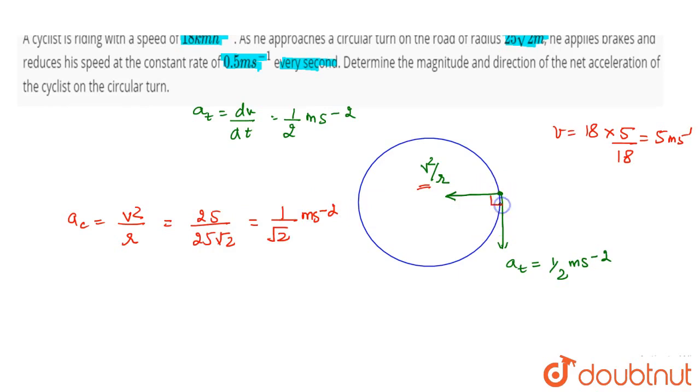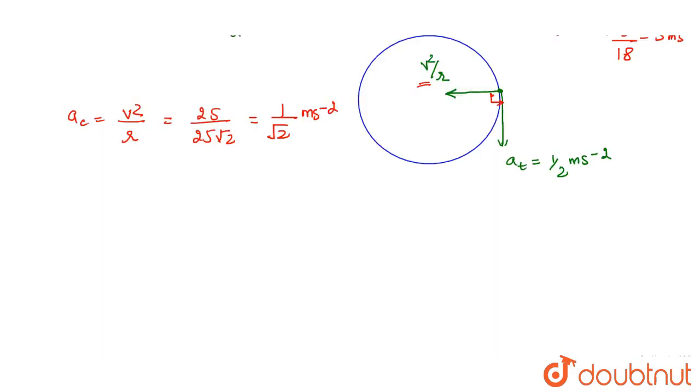Now, since the accelerations are at 90 degrees, the net acceleration will be anet = √(at² + ac²). This equals √((1/2)² + (1/√2)²) = √(1/4 + 1/2) = √(3/4) = √3/2 meter per second square.